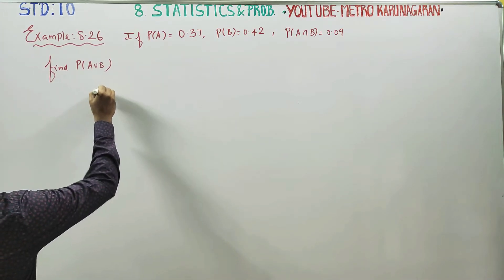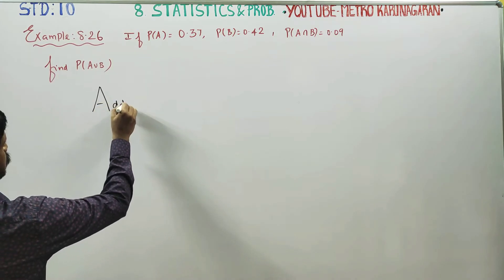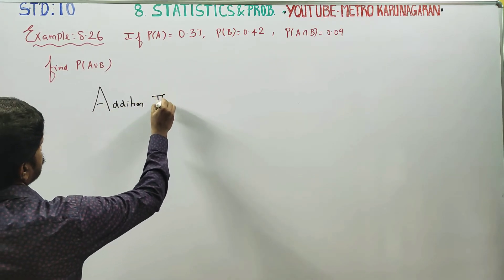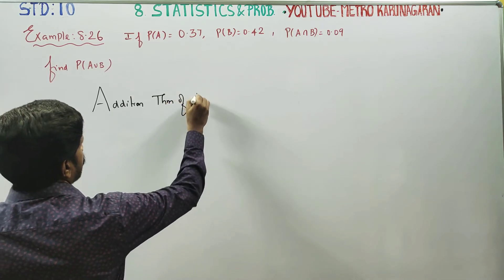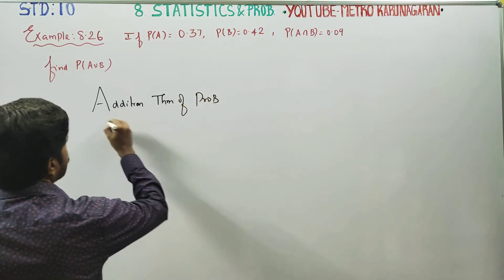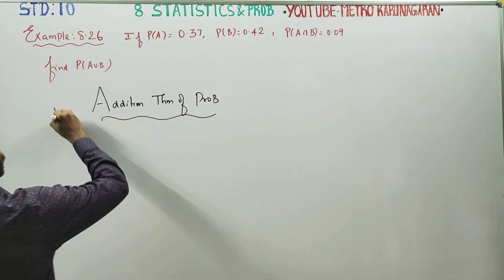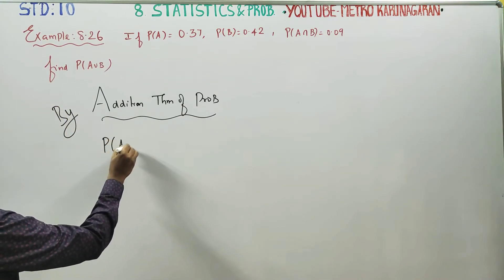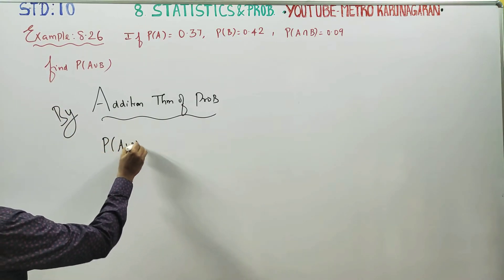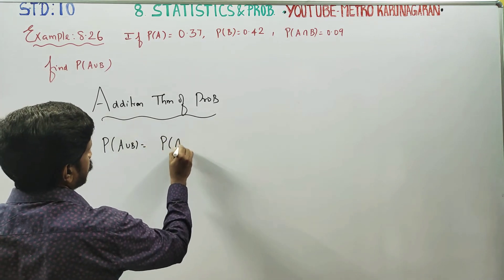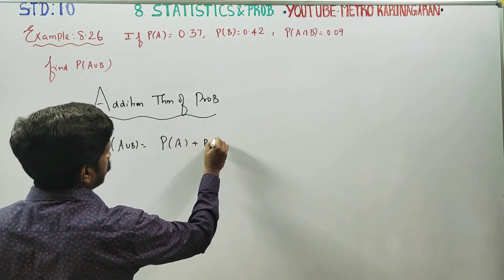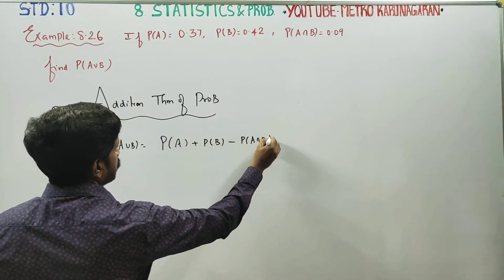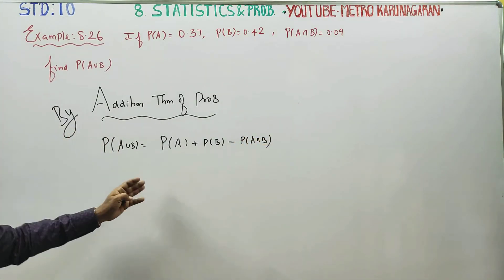There is a theorem called the Addition theorem of probability. By the Addition theorem of probability, probability of A union B is equal to probability of A plus probability of B minus probability of A intersection B. This is called the Addition theorem of probability.